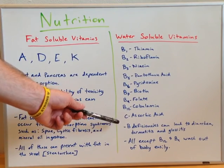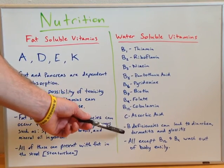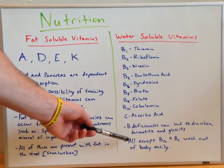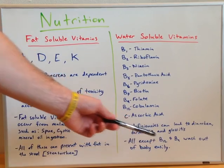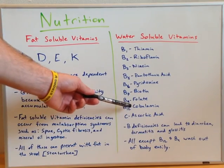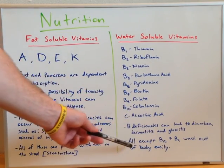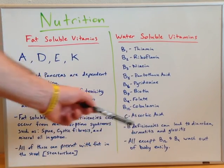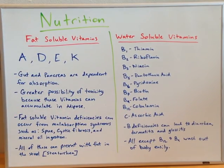Vitamin B deficiencies can lead to diarrhea, dermatitis, and glossitis. All except B12 and B9 — that's cobalamin and folate — wash out of the body easily. These two tend to not wash out as readily because they are stored in the liver.